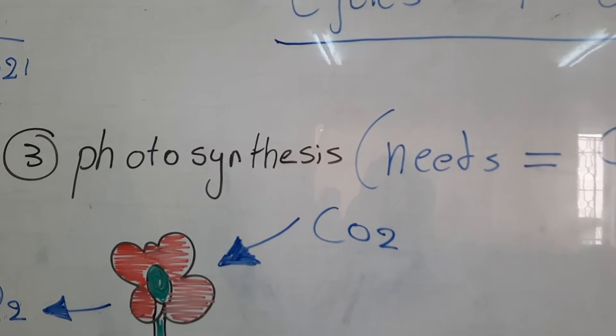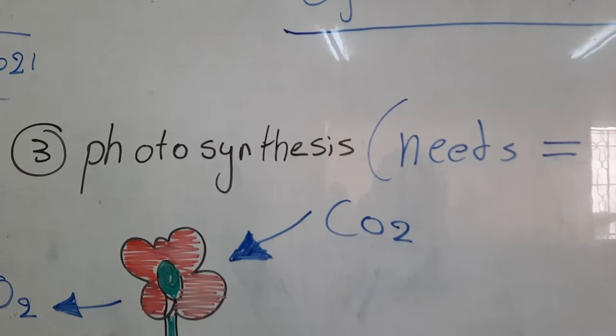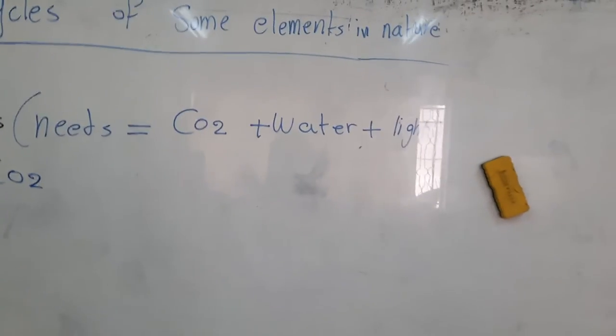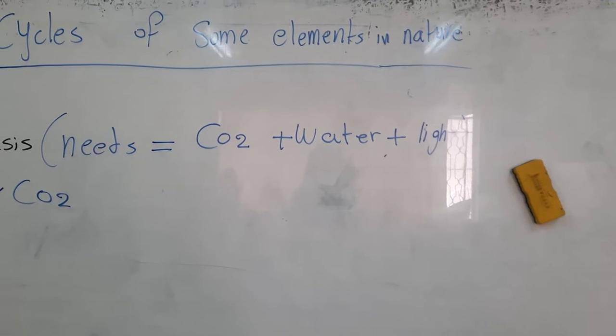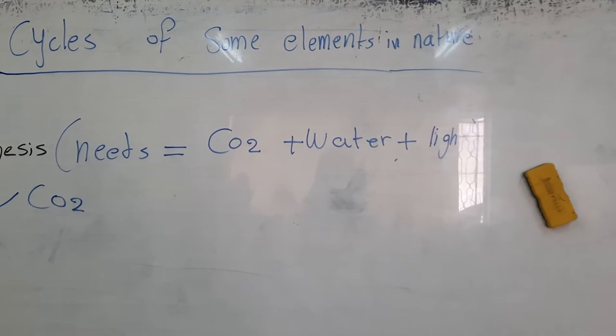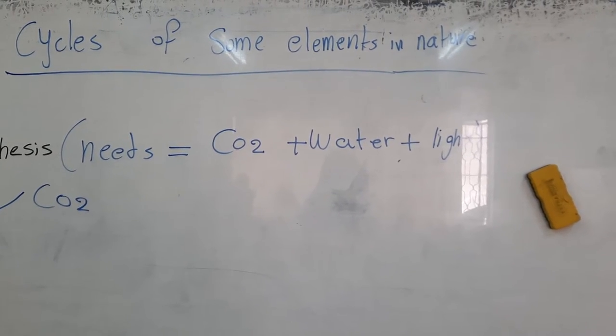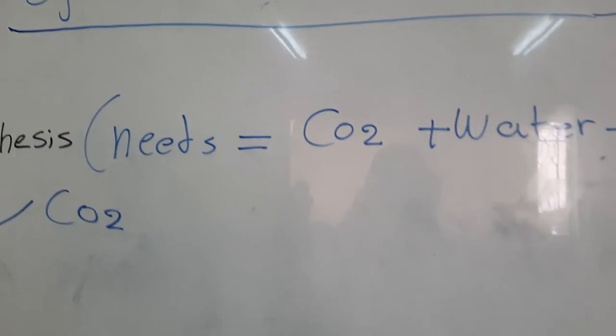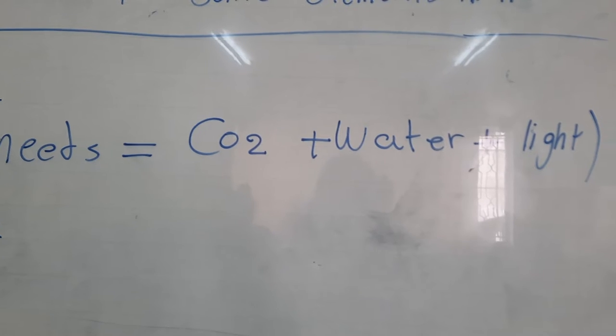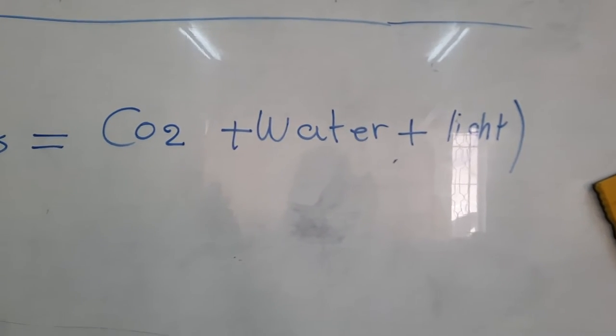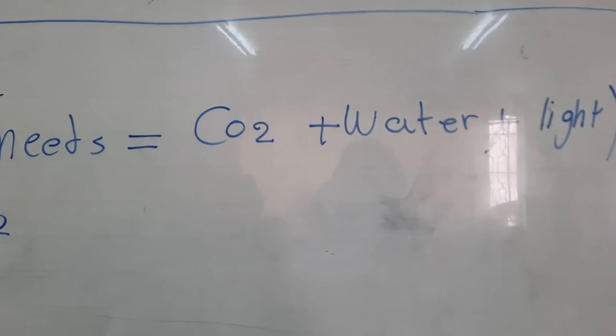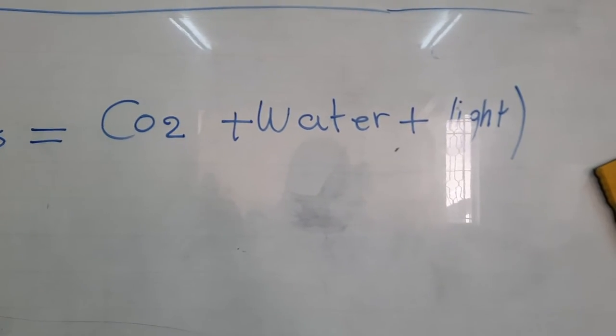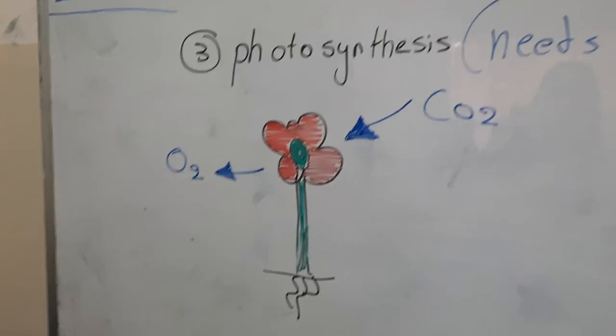Photosynthesis needs carbon dioxide (CO2) plus water plus light. The CO2 comes from air, water from soil, and light from the sun.